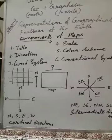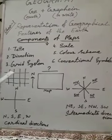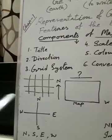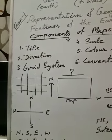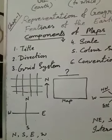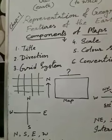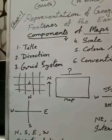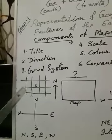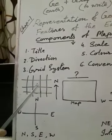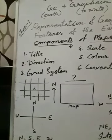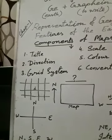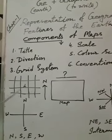Now the third component is grid system, which I already mentioned in our first video. Grid means a framework, mainly developed with the help of latitude and longitude, and we get this kind of frame on a map or globe which helps us to locate any place. Suppose I am giving one dot here — it is one place, Place A. If you know its latitudinal and longitudinal value, you can easily say that Place A is located within this grid. So grid definitely helps us, but you must know the latitudinal and longitudinal values.